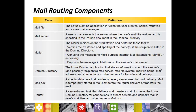Mail Routing Components. If you want to route mail from one person to another successfully, certain components are involved behind the scenes. Mail file: users should have a mail file to send and receive mails — it is a Domino application where users can create, send, retrieve, and store mail messages. Mail server: a user's mail server is where the user's mail files reside, specified in the person document in the Domino directory. The mailer is a task that resides on the workstation and verifies the existence and spelling of names in the recipients field, converts messages to MIME if necessary, and deposits mail in the mail.box on the sender's mail server.